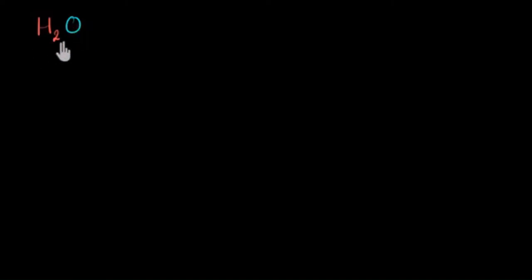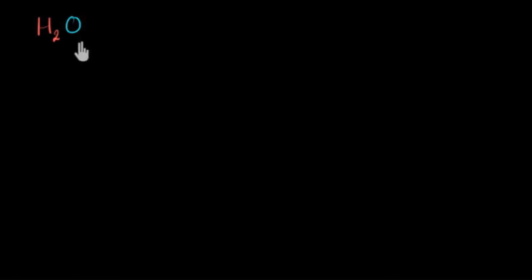Water is H₂O, meaning one atom of oxygen is sharing its electrons with two atoms of hydrogen. There are only covalent bonds between oxygen and hydrogen in this molecule. All the atoms in this molecule have their octet or duplet complete. So let's try to draw their electron dot structure and see how these atoms share electrons and become stable.